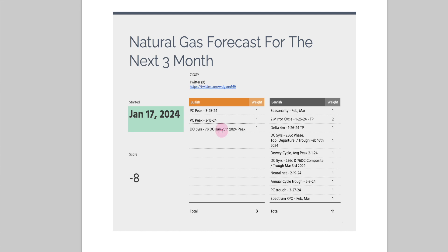This one just peaked in January right here. This is the dominant cycle — 5-year 76 — and that one just peaked on January 28th, which is today. These are future projections, so this is assuming that prices are going to go higher and continue grinding higher to around these dates.